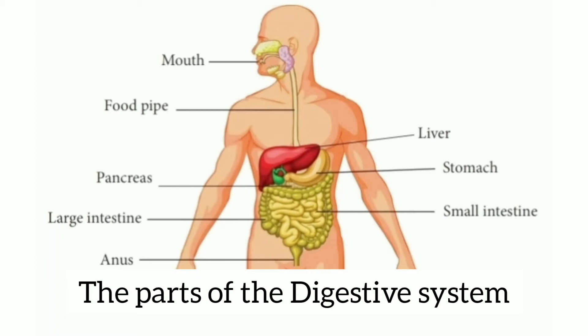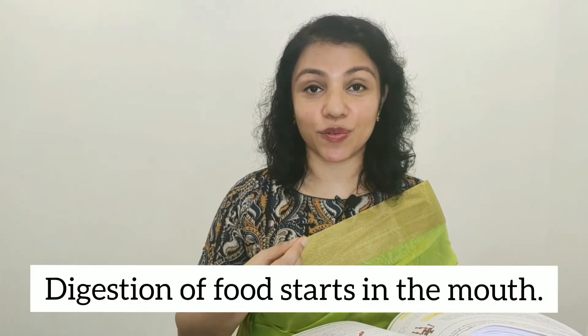The parts of the digestive system are: mouth, food pipe, stomach, small intestine, large intestine, anus, liver, and pancreas. The process of digestion starts in the mouth — when you put food in your mouth, saliva mixes with it and you chew the food. That is the beginning of digestion, so it is very important for you to chew your food well, as that will help the digestive system to digest food effectively.